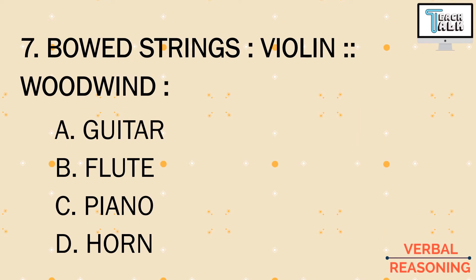Number seven: bowed strings is to violin, woodwind is to blank. Bowed strings are a type of instrument with strings, like a violin, guitar, or viola. Which of the following is an example of a woodwind instrument? Is it a) guitar, b) flute, c) piano, or d) horn? Among the options, the only woodwind instrument is letter b) flute.